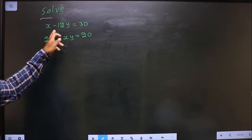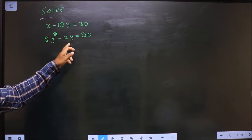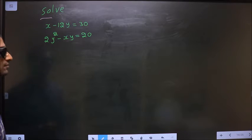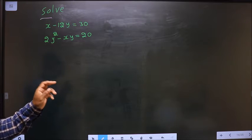Solve x minus 2y equal to 30 and 2y square minus xy equal to 20. See here, how do we solve these equations?